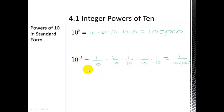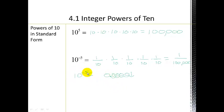To write 10 to the negative 5th as a decimal: start with 1 and move the decimal point 5 places to the left — 1, 2, 3, 4, 5 — filling in with zeros. So 10 to the negative 5th gives a very tiny number. You can verify on a calculator that 1 divided by 100,000 equals this very small decimal.